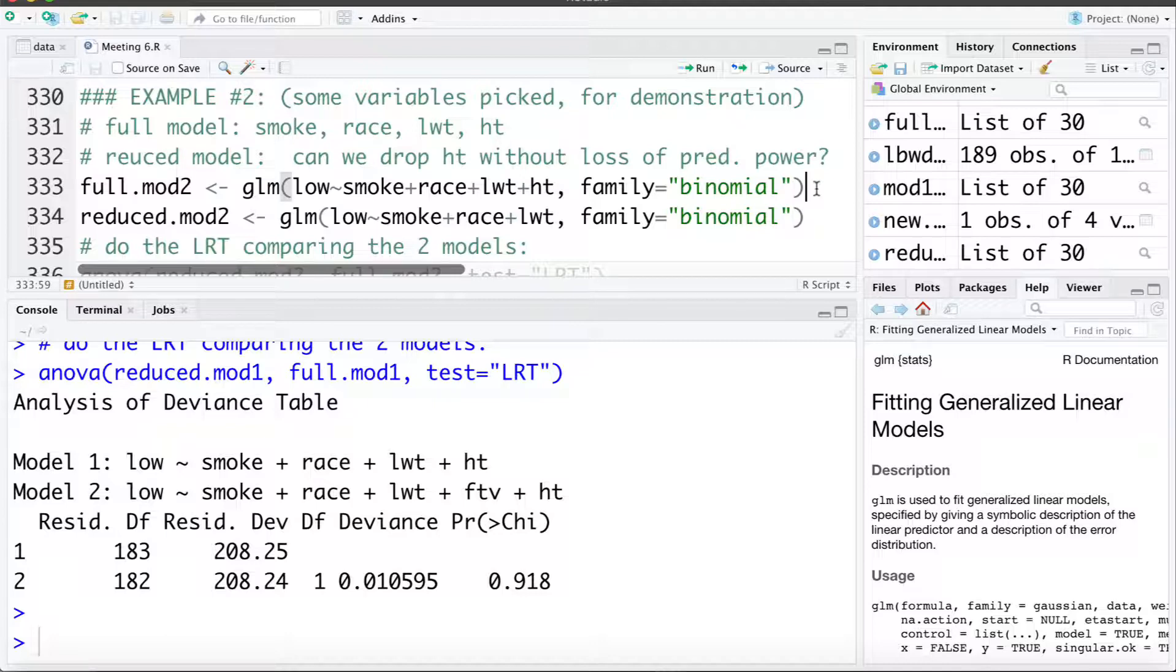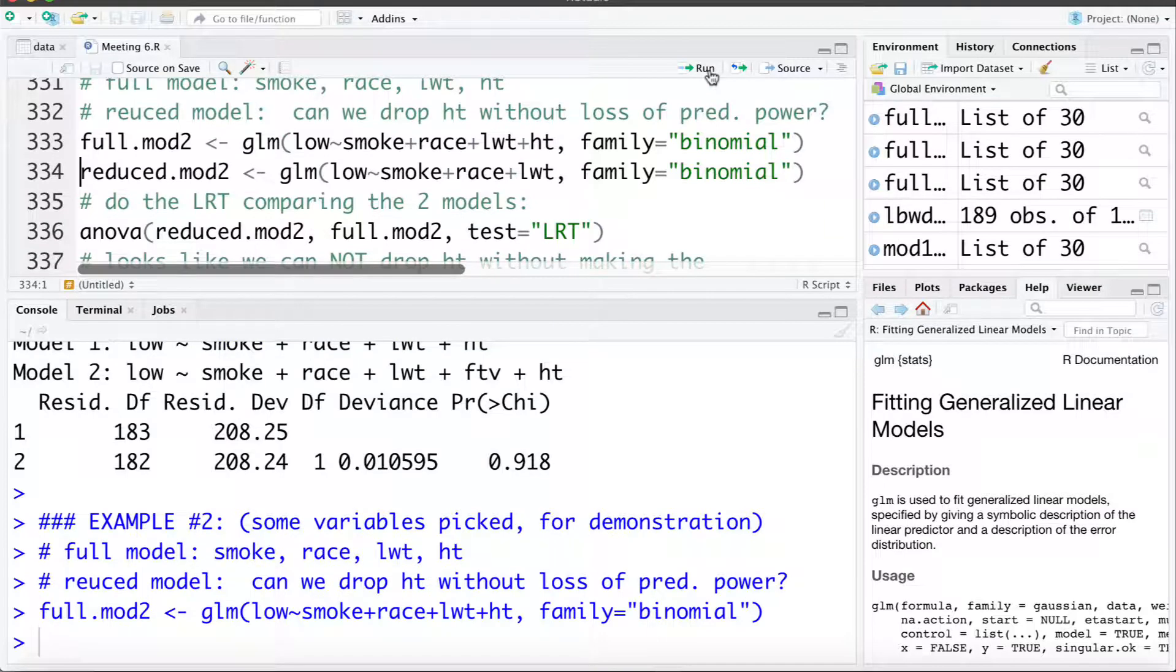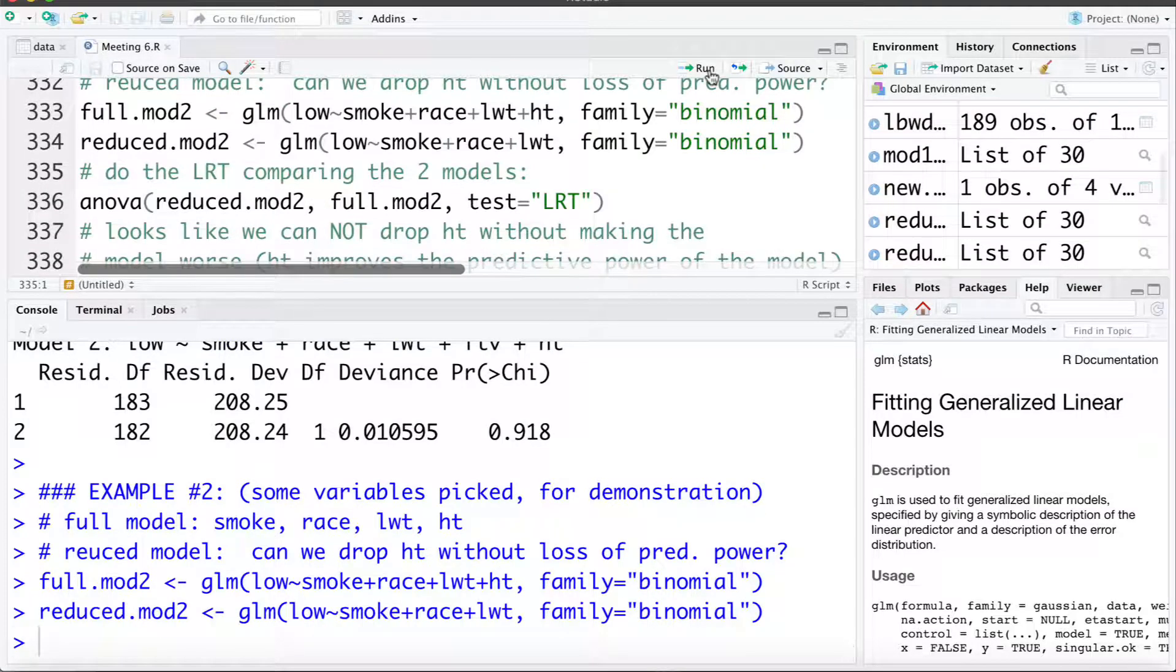So first I'm going to fit that full model, and then I'm going to fit the reduced model, a model with HT removed from it. We'll compare the two again using the likelihood ratio test using the ANOVA command, entering the two models and this test equals LRT to indicate we'd like to do the likelihood ratio test. So let's run that test.